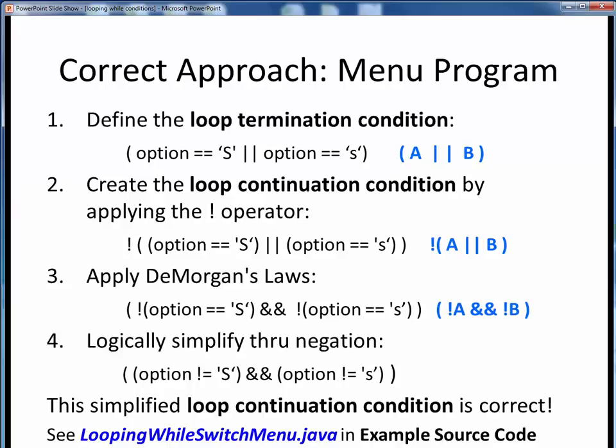Open up this file in JGrasp so you can follow along. This example will demonstrate setting up a code framework for handling case-insensitive keyboard input using a switch statement, which is something you'll need to understand well for current and upcoming programs. That's it for this discussion of setting up proper while loop continuation conditions.